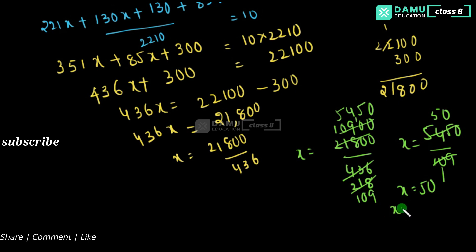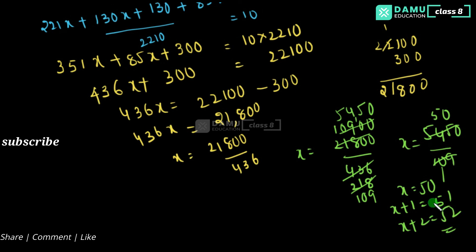So x equals 50, x plus 1 equals 51, x plus 2 equals 52. The three consecutive numbers are 50, 51, and 52. Thanks for watching, please subscribe.